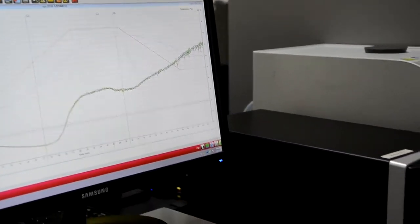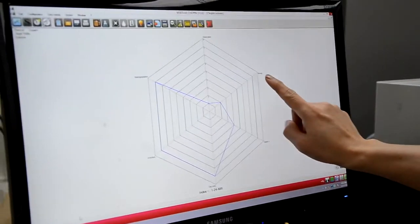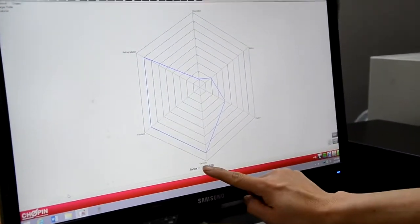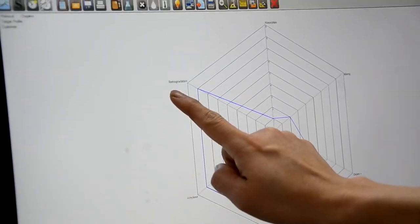What this does is it provides you a spider chart. It shows you the absorption, mixing, gluten, viscosity, amylase activity, and retrogradation.